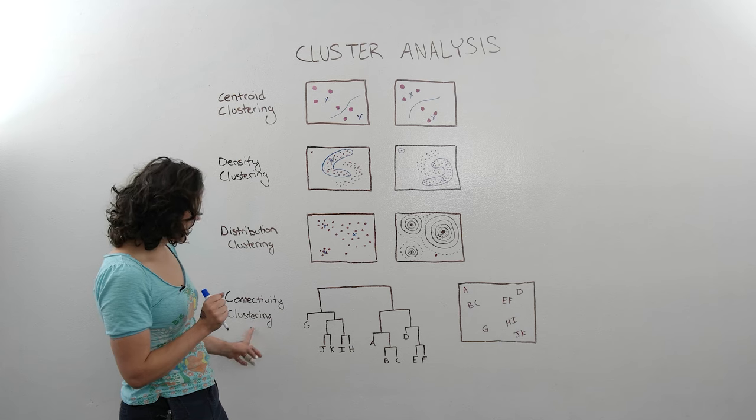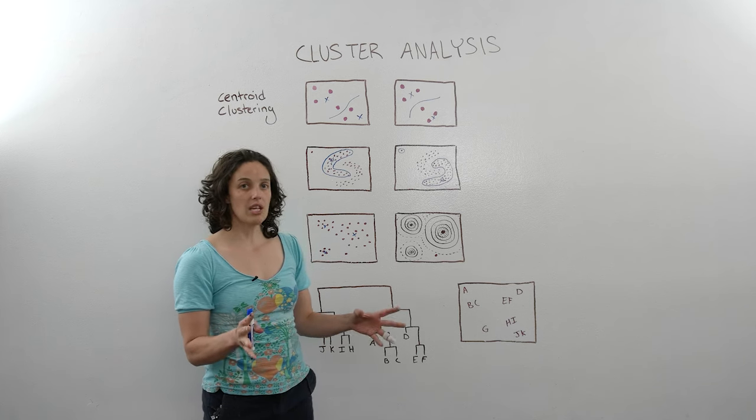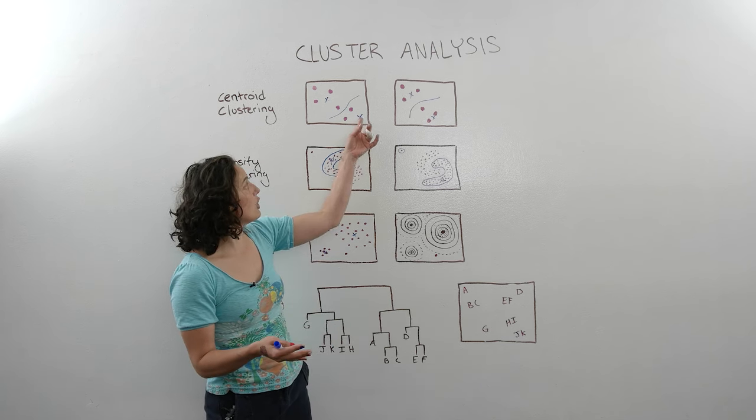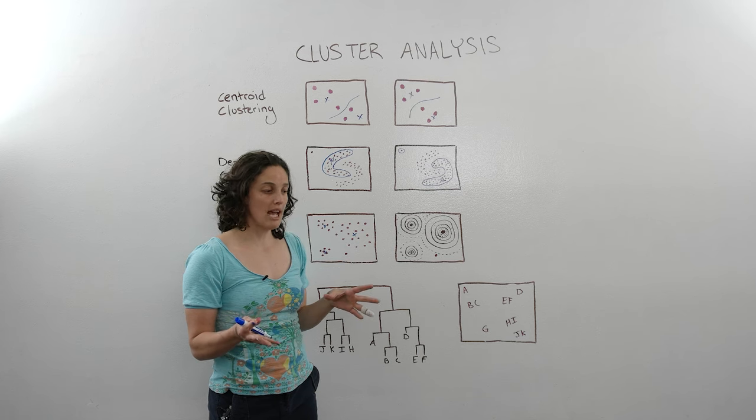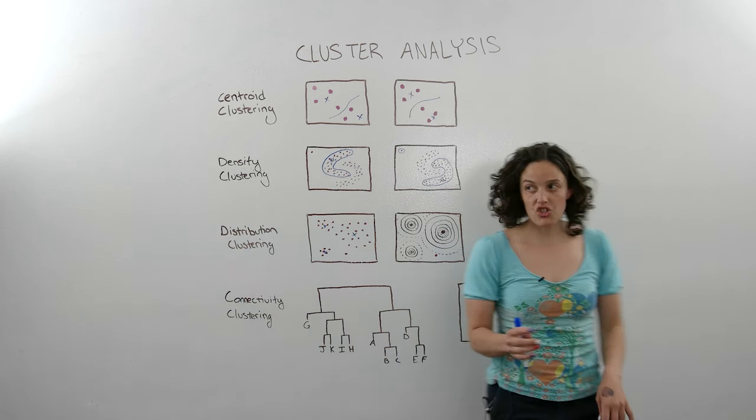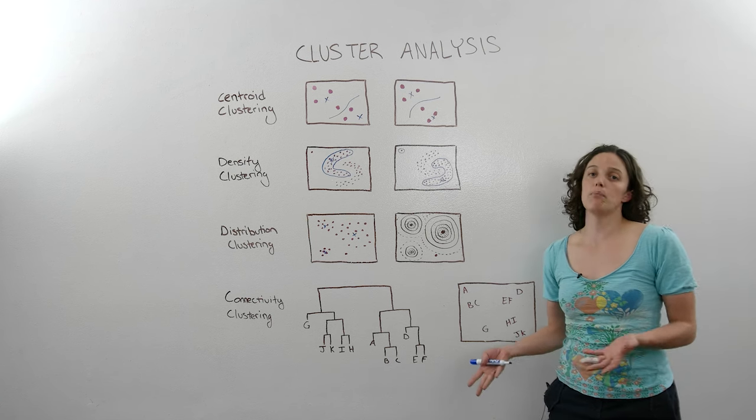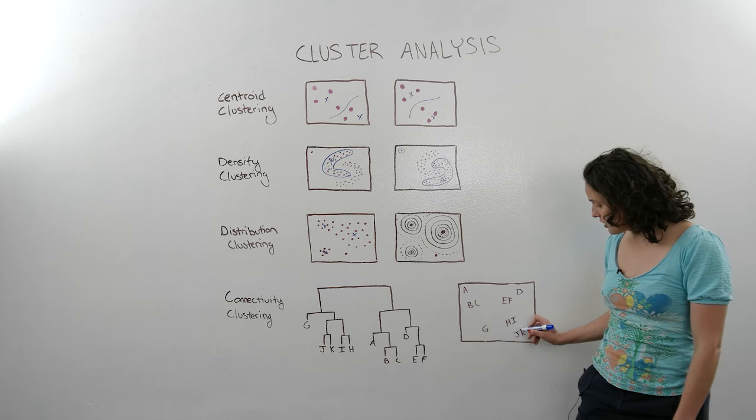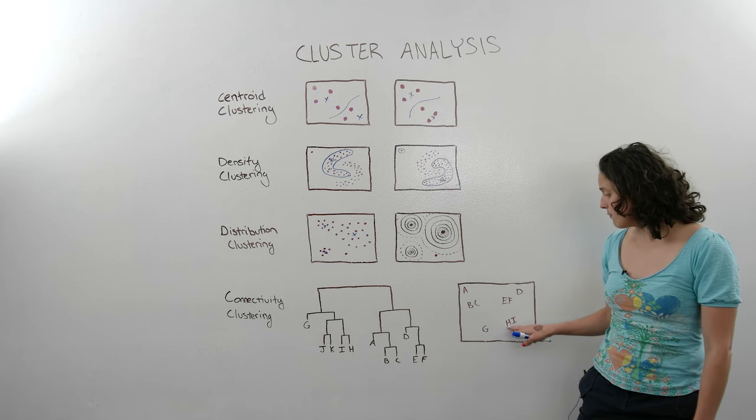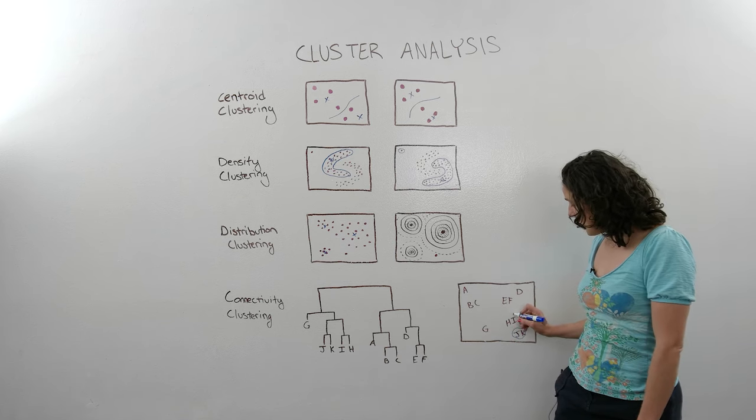So next we're going to talk about connectivity clustering. This is another interesting one because you basically start with individual clusters. Each person is their own cluster. And rather than being determined by how close it is to a particular centroid, we determine how much it's related to another individual. For example, let's pretend that person J here has a Labrador Retriever, and person K here has a Golden Retriever. The products that they buy are probably very similar, and therefore they're going to be very related to each other. In contrast, person H has a poodle, person I has a Labradoodle. They're likewise going to be buying things that are very similar and can be clustered together.